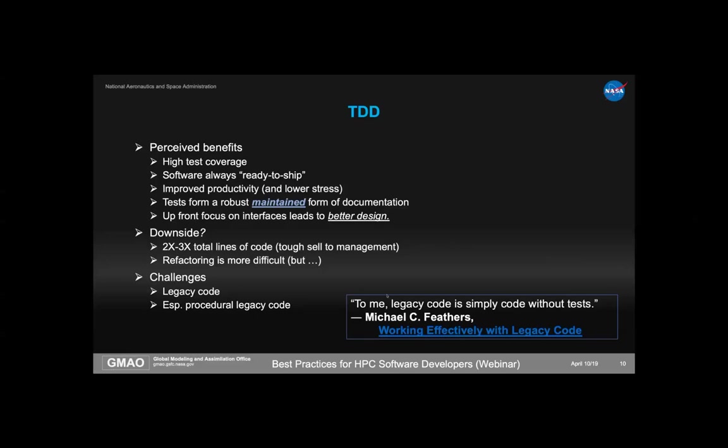If someone hands you a code and you want to work on it, you want to know what you can safely do. Without tests, there's nothing you can safely do — you have to understand the entire code before making that first change. Legacy code is therefore very difficult to work with in a TDD environment: easy to add new things, hard to fix old things. Even techniques for working with legacy code are nearly impossible to apply to procedural code; objects give us a way to do injection.